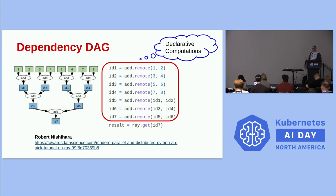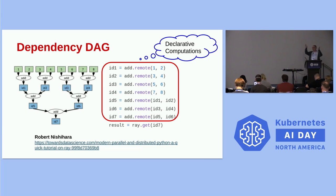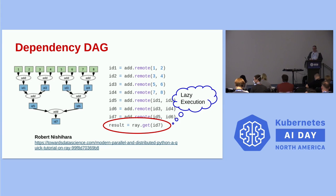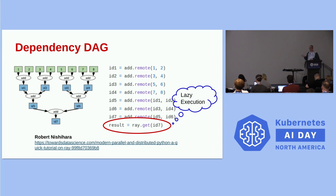Anyone who's worked with Spark will find this familiar — these are declarative computations. Up to this point Ray has not done any work for you; you're just telling it the work you'd like it to do, the structure, and the dependencies. At the very end, when you issue a dot-get command, it says 'okay, now you want a result' and unwinds all those computations and actually computes them. So like Spark, it has a lazy execution model.